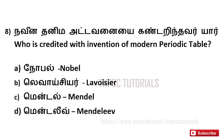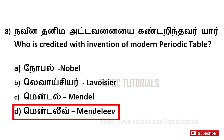Who is credited with the invention of the modern periodic table? A. Noble, B. Lavoisier, C. Mendel, D. Mendel. And the answer is D. Mendel.